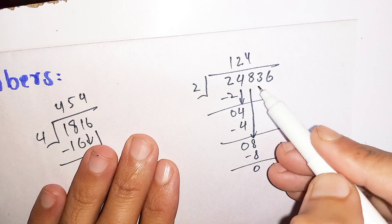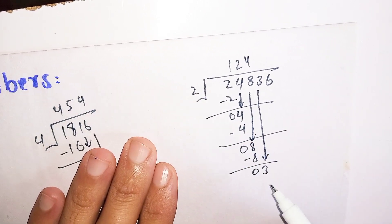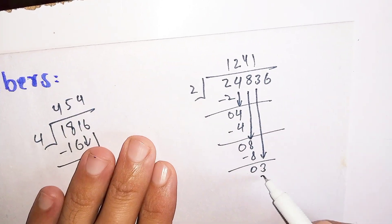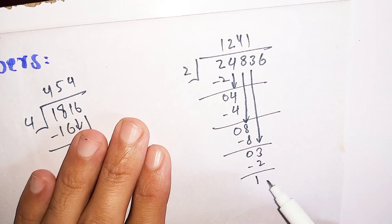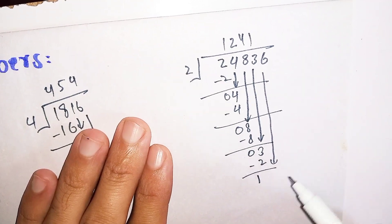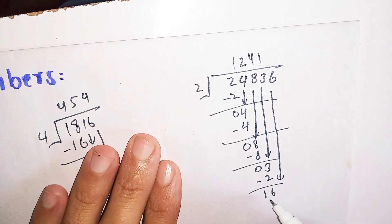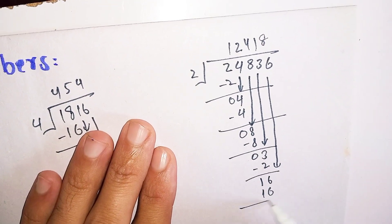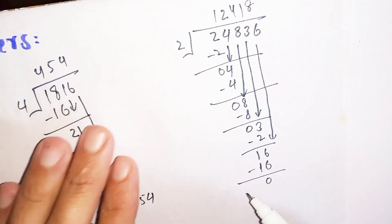We will bring down the 3, which becomes 3. How many times does 2 go into 3? 2 times 1 is 2. Subtract 2 from 3, the remainder is 1. Now we will bring down the 6 near 1, which becomes 16. How many times does 2 go into 16? 2 times 8 is 16. Subtract 16 from 16, the remainder is 0.